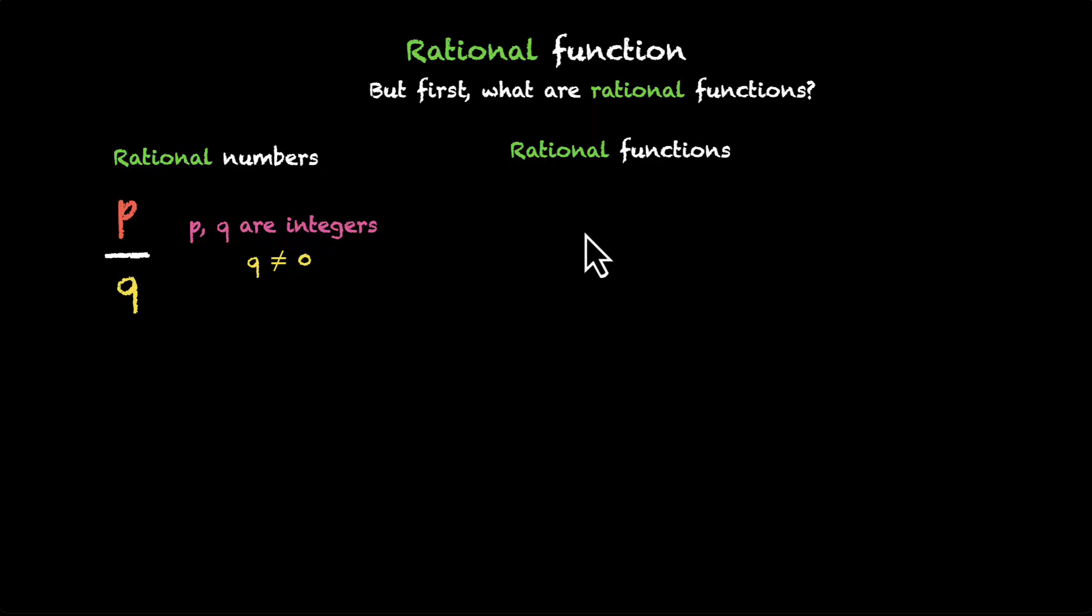Now let's look at the definition of rational functions. Rational functions are of the form p(x) by q(x), where p(x) and q(x) are polynomial functions. And we've thoroughly discussed what polynomial functions are in our previous video. And just like in the case of rational numbers, where we don't want the denominator to be 0,